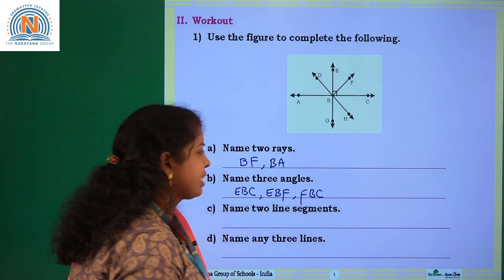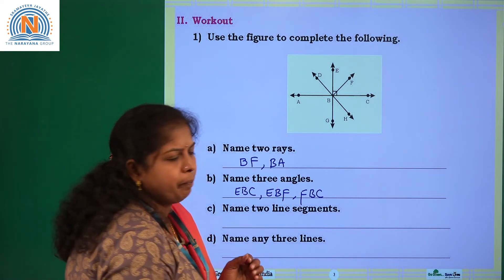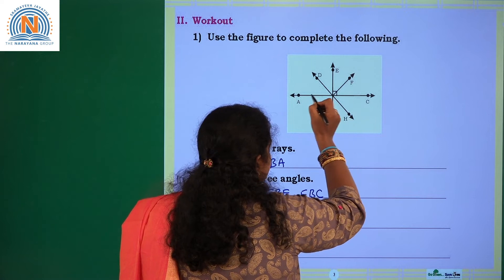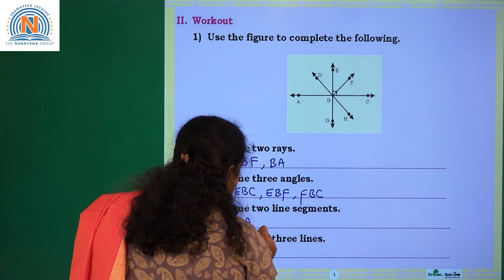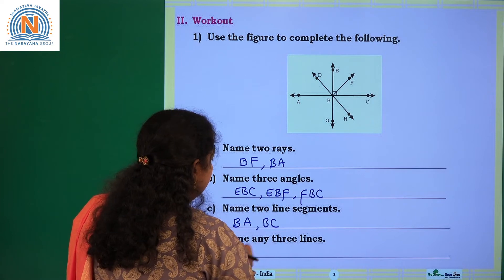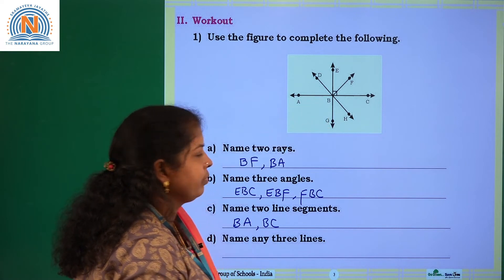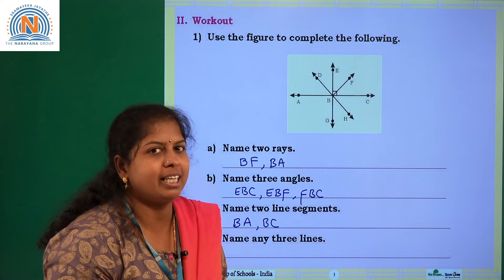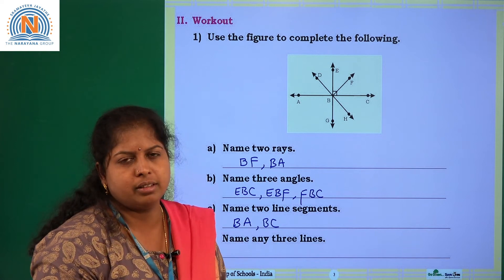Name two line segments. A line segment has two endpoints and a fixed length. If you observe the figure, BA is one line segment and BC is another. You can also take BD or BH, or BE or BG — because a line segment is a part of a line, you can choose from the figure.